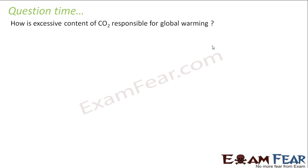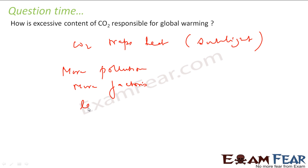How the excessive carbon dioxide is responsible for global warming? So as we have told that carbon dioxide traps heat, traps heat or sunlight. So what is happening is, due to more pollution, more factories, less trees, due to all these, the carbon dioxide concentration is going up in the atmosphere.